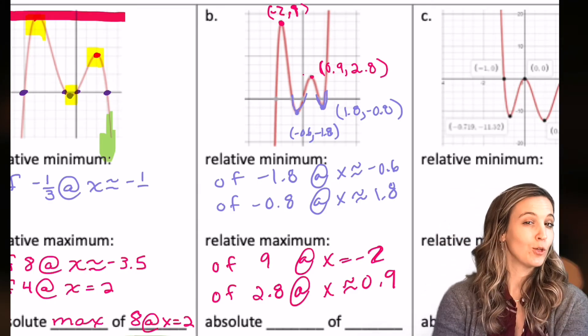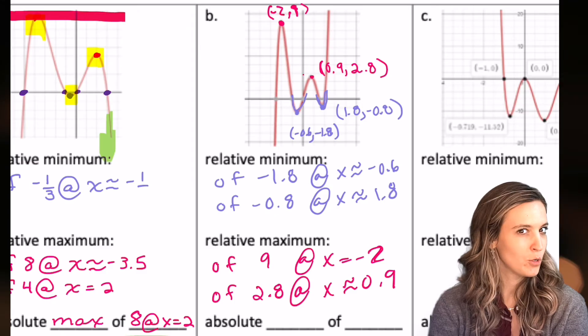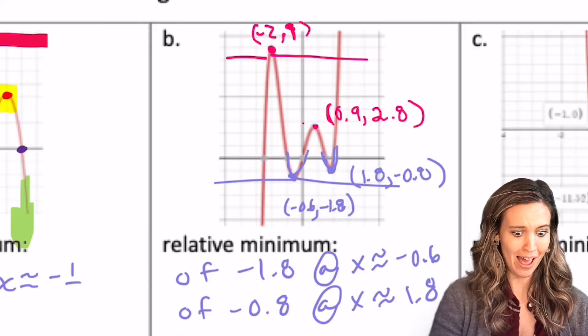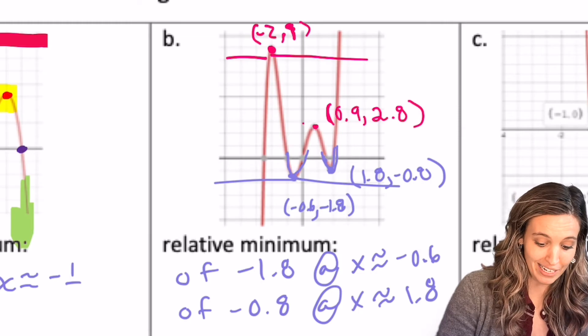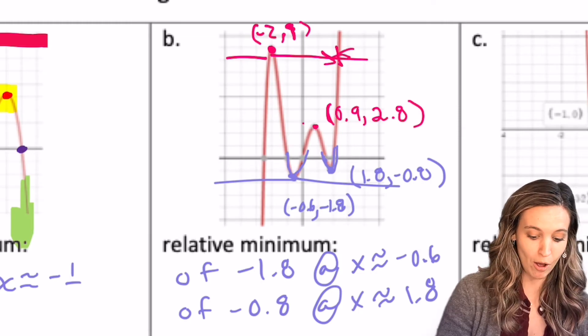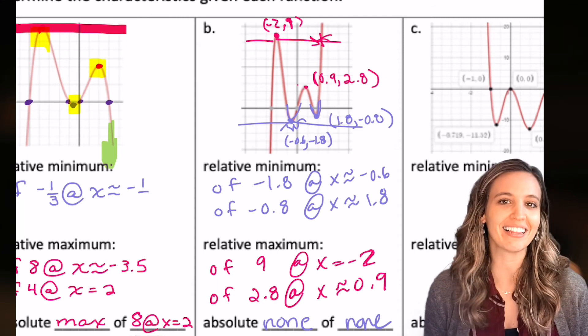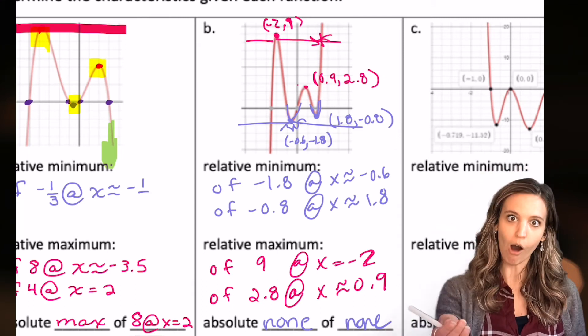Now, are any of them absolute mins or maxes? Do I have a ceiling? Do I have a floor? Do I? No! Look, I break through the ceiling. And I also break through the floor. So I'm going to specify none. Don't leave it blank like you don't know. Tell me. You know there are none.